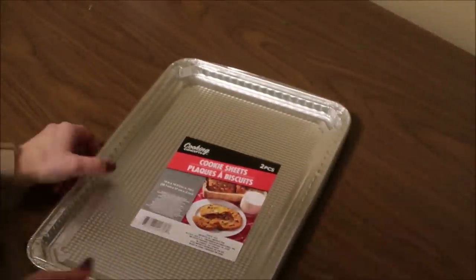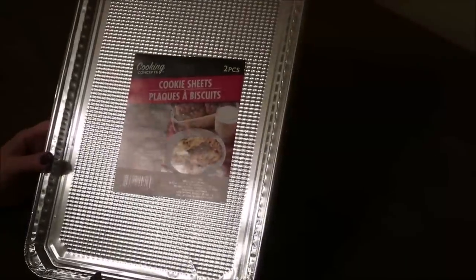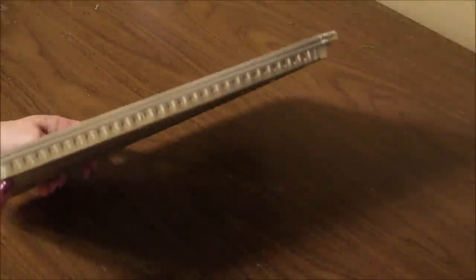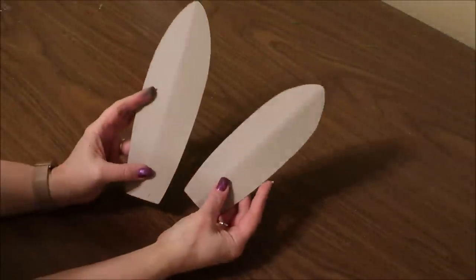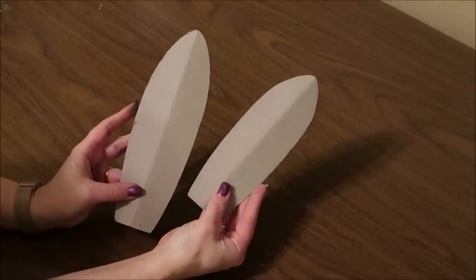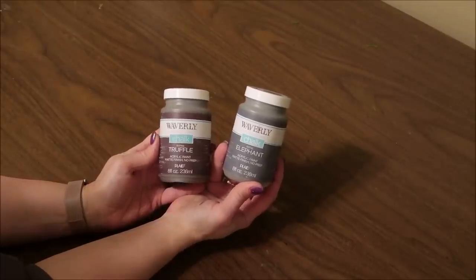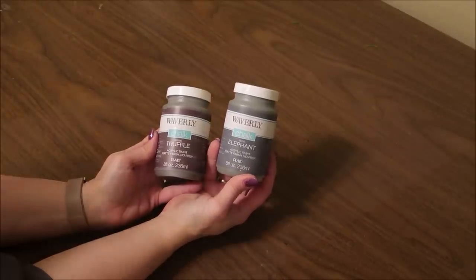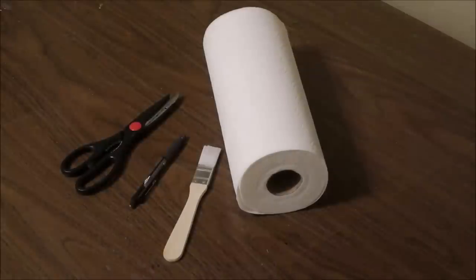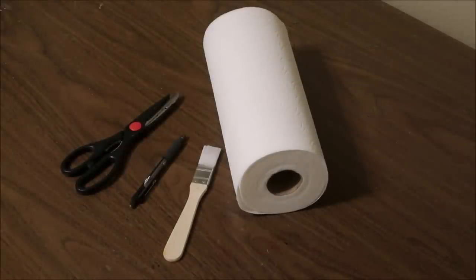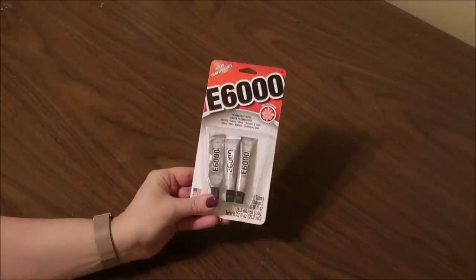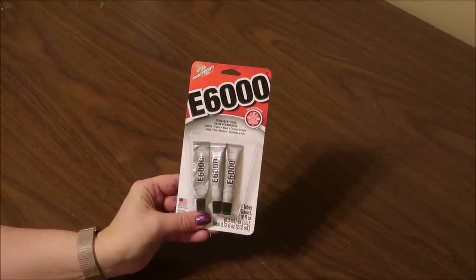The main thing that I am using for these flowers are these cookie sheets from Dollar Tree. They come in a two-pack and are basically just heavy aluminum foil. I picked up four packages of these for the large flower, so a total of eight trays. I cut out some patterns for my flower petals - I'll put a link in the description box below to a pattern that you can download. I'll also be using some chalk paint in the color Elephant and also in the color Truffle. These are Waverly chalk paints from Walmart for about five dollars a bottle. You also need one piece of foam core board from Dollar Tree, an old pair of scissors, a pen, paintbrush, some paper towels, and also a box cutter.